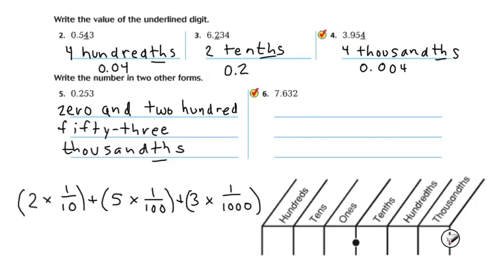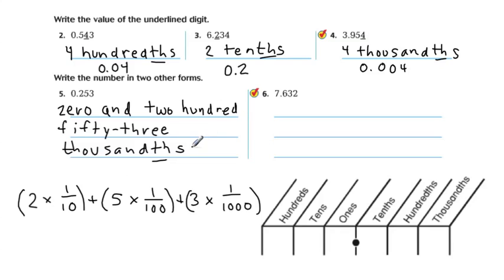I'm going to erase this and use it one more time. All right, next one — naming this number in words. We've got 7.632. It ends in the thousandths place again, so I'm going to use that in my name. First, I'm going to name the whole number: it's 7.